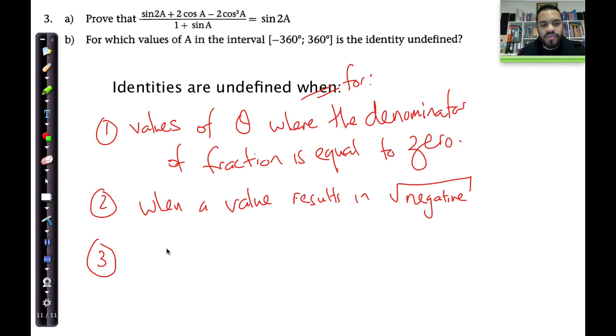The third occurrence is when tan theta is involved, and that is if theta is equal to 90 degrees plus k times 180, which I'll explain shortly, for k an element of Z.